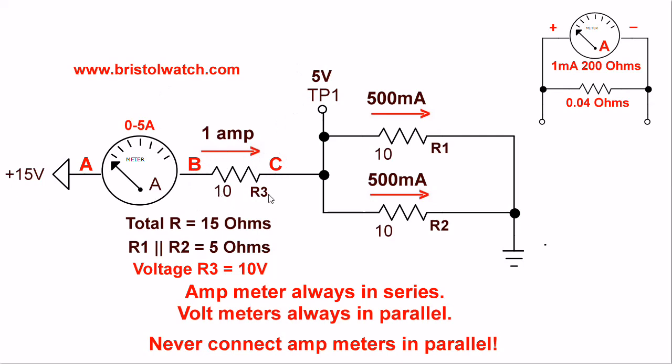Something else to note: what is going to be my current? All you need to do is divide 15 volts by your total resistance of 15 ohms, and you get 1 amp.